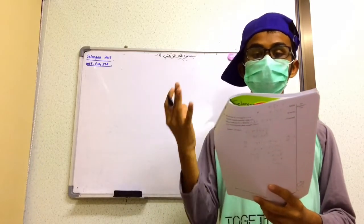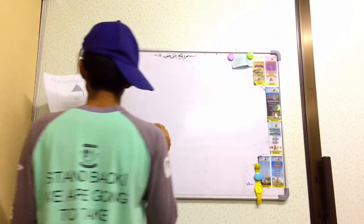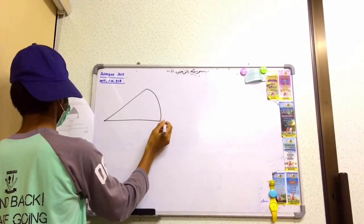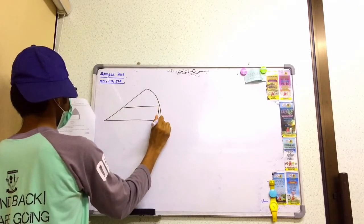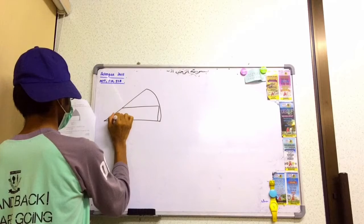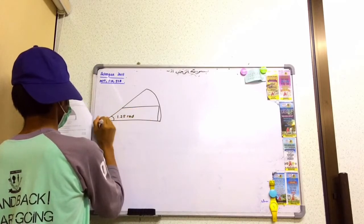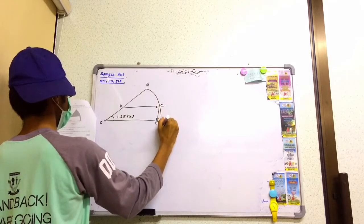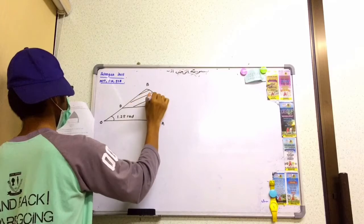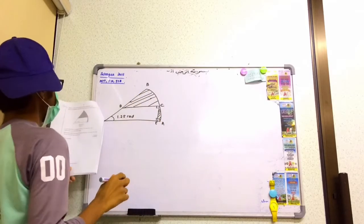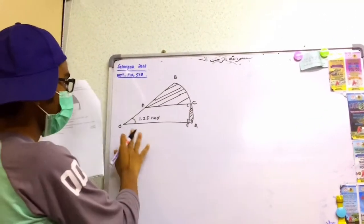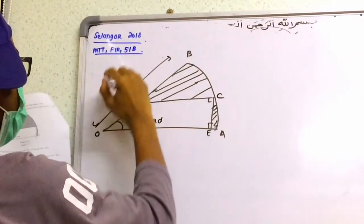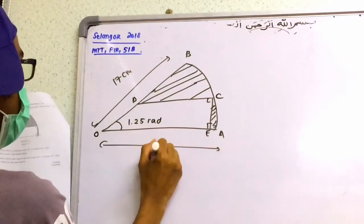Diagram 12 shows a sector OAB with center O and radius 17 cm. So the first thing is I have to draw first. We have O, B, then C, then E right here. After that is the shaded region, the kawasan yang berlorek here. The radius is 17, and this is also 17.